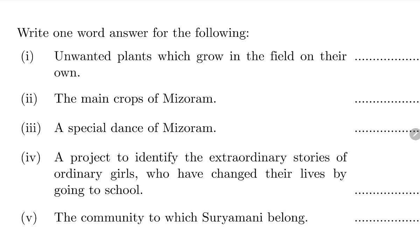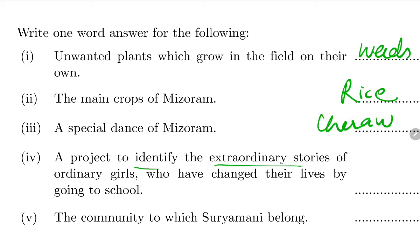One word answers: Unwanted plant that grows - weed. The project that tells extraordinary stories of girls - Girl Star Project. The community to which Suryamani belonged - Kuduk.